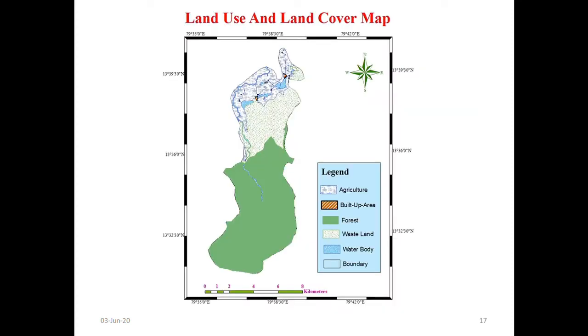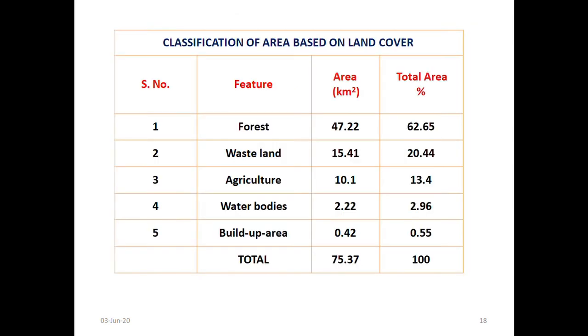This is the land use land cover map which are categorized into six groups: agricultural, built up area, forest, rice land, water body, and waste land areas. Here maximum part of the portion is covered with forest. Like this, forest 47.22%, around 50% to 62% of area.